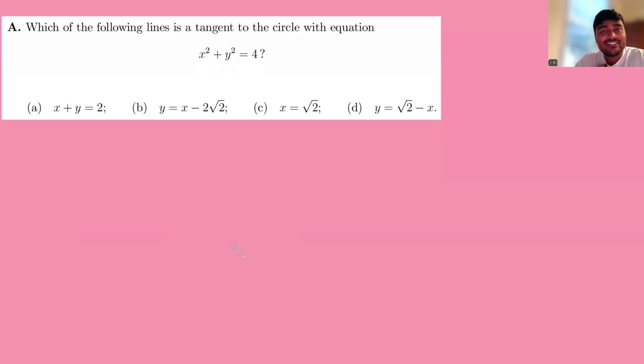Which of the following lines is a tangent to the circle with equation x squared plus y squared is 4? This is taken from an Oxford University maths admissions test.